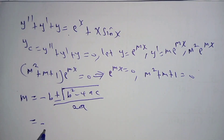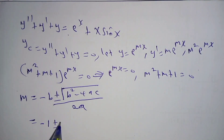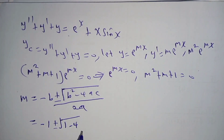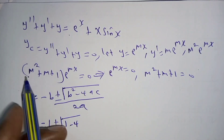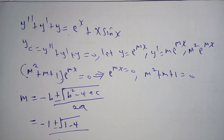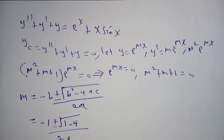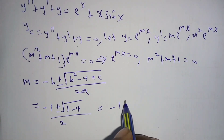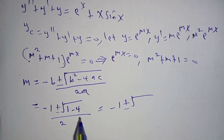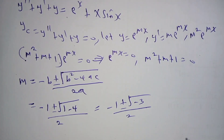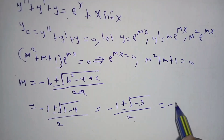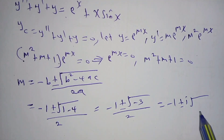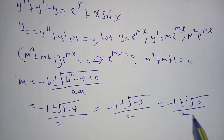Substituting gives m = (−1 ± √(1 − 4)) / 2, since A = 1 and C = 1, giving 2A = 2. This simplifies to (−1 ± √(−3)) / 2, which equals (−1 ± i√3) / 2.